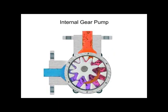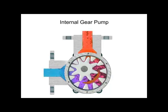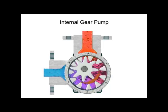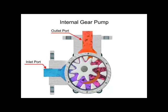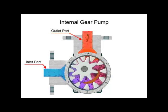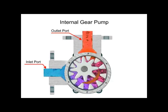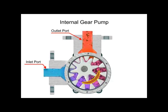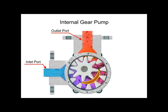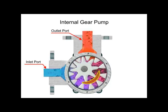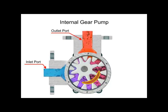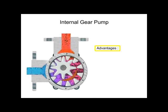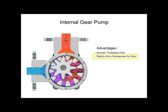Liquid is trapped in the gear spaces and carried from the inlet to the discharge. A stationary crescent-shaped divider separates the intake and discharge portions of the fluid.